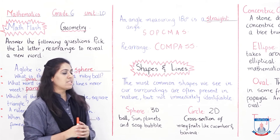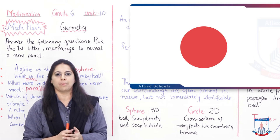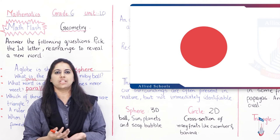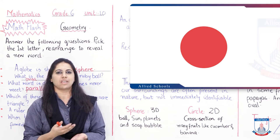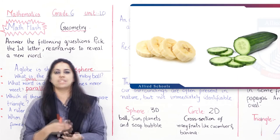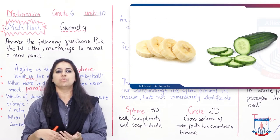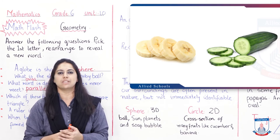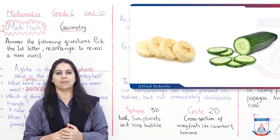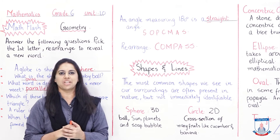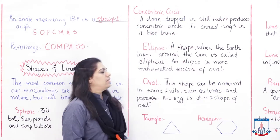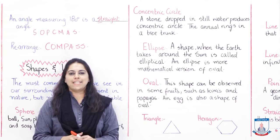The second shape is circle. Circle is a 2D shape - it has a flat surface. You can see circles in the cross-section of many fruits like cucumber and banana. Cross-section means when you cut a banana or cucumber, the resulting shape is a circle. Even when you cut a watermelon, it also forms a circle shape.